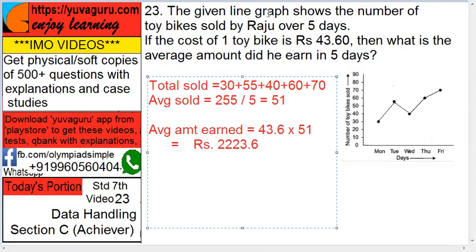The given line graph shows the number of toy bikes sold by Raju over five days — Monday to Friday. If the cost of one toy bike is ₹43.60, then what is the average amount he earned in five days? You have to find the average.